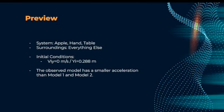So the system in this experiment was the apple, the hand, and the table, and the surroundings were all the space around it. The initial conditions were an initial velocity of zero meters per second and an initial height of 28.8 centimeters. And finally, the observed model had a smaller acceleration than model 1 and model 2, and we'll get more into that later.